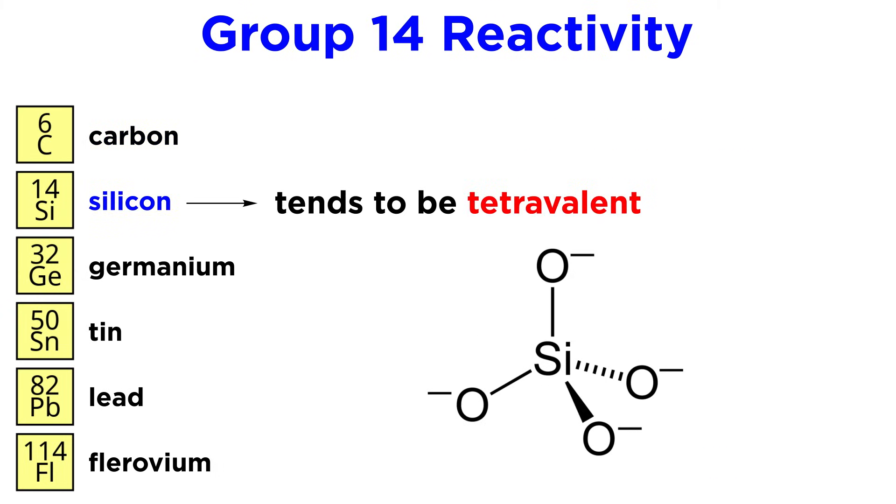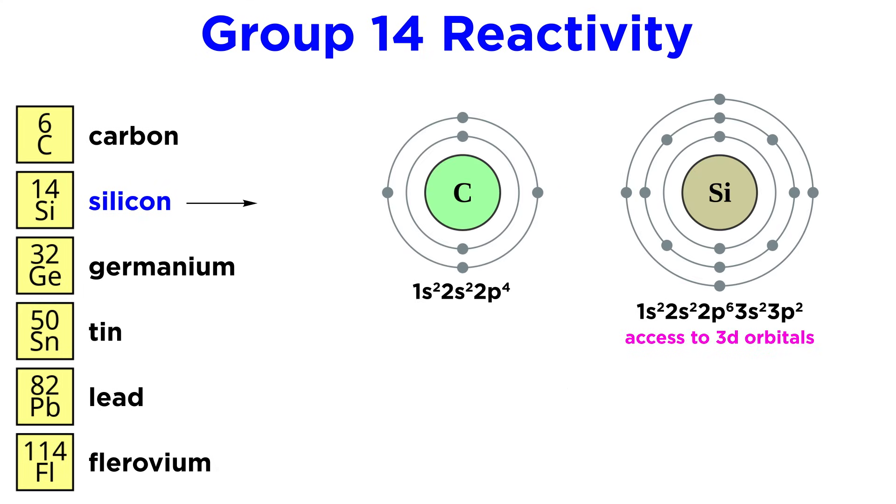Silicon is similar to carbon and therefore tends to be tetravalent, but with an extra shell it has occupied d orbitals, which makes for easy hybridization and changing of geometry. More atoms can fit around the larger silicon atom than the smaller carbon atom. This means silicon can be pentavalent while carbon cannot, save for fleeting moments under certain extreme conditions we will not discuss here.